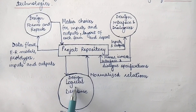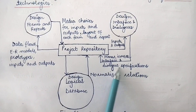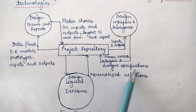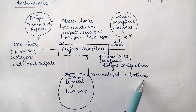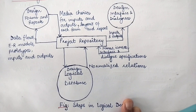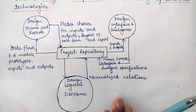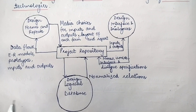From the project repository there is a flow of data towards the logical design of the database, and a flow back from the logical database design to the repository. This involves normalized relations — once you have determined the relations, meaning the tables, you need to normalize them. These are the various steps in the logical design, and after this video we will be discussing all these things in detail, like forms and reports, which are the basic components of logical design.